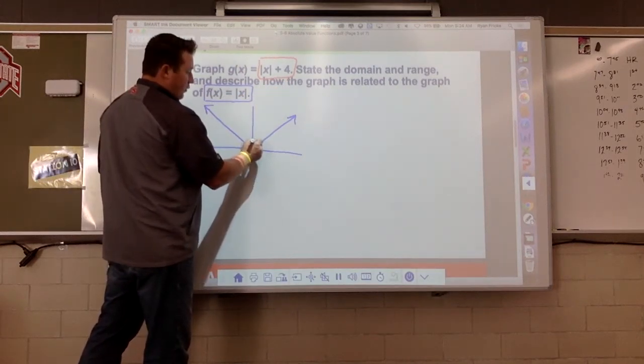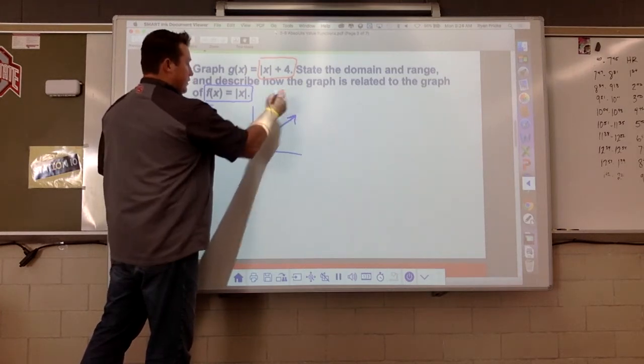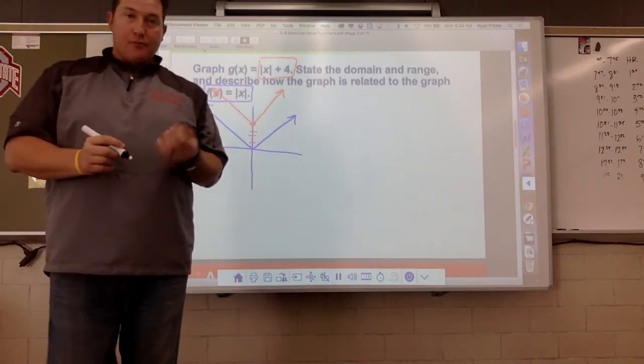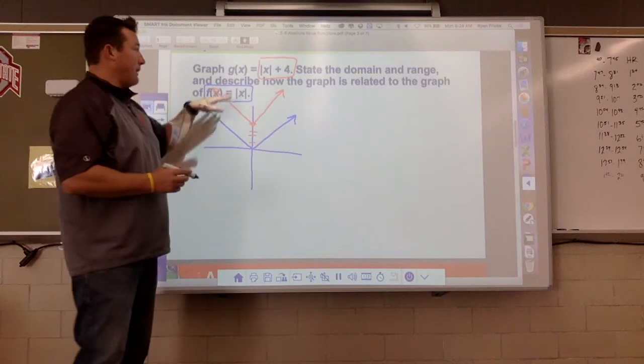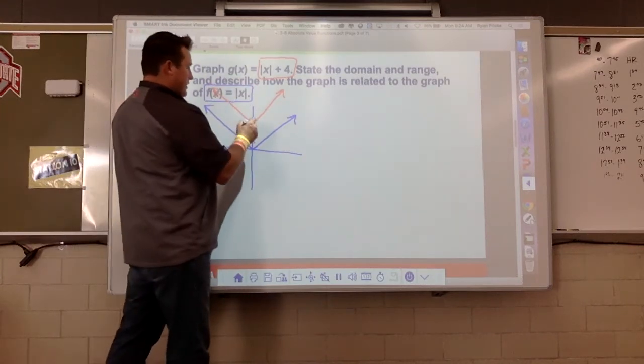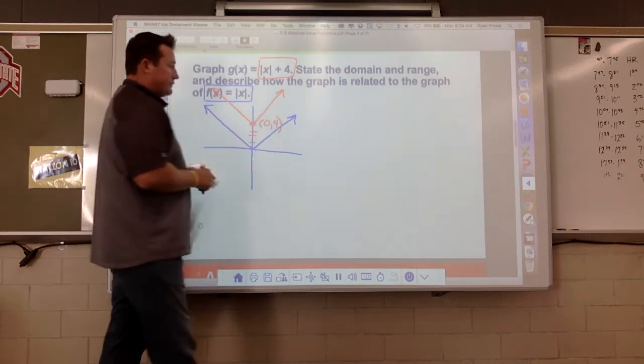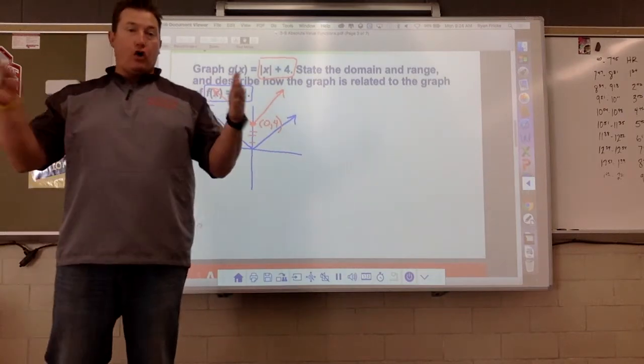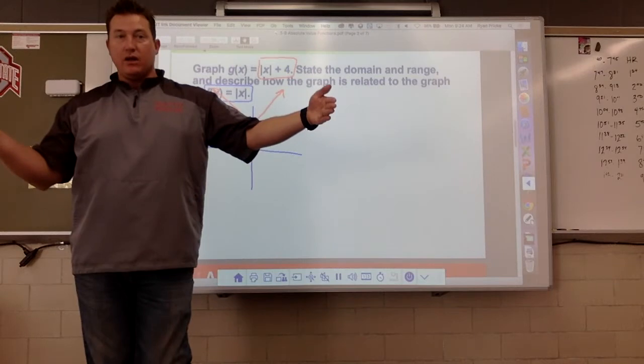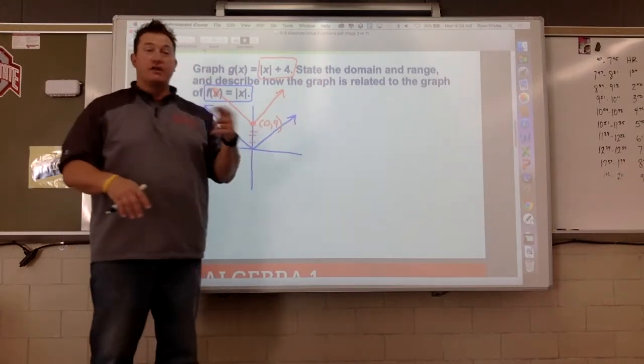So we would go up one, two, three, maybe here's four units. And now it's literally gonna have the exact same shape, it just goes up four units. Domain and range. So I'm assuming they just want the domain and range of this function. So this is the point zero comma four. So domain all real numbers. We scan to the left, we scan to the right, we go negative infinity, positive infinity.